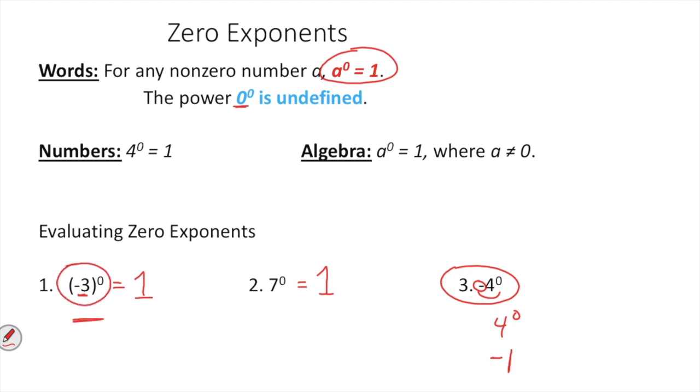Here, the negative was in the parentheses raised to the zero power as one. Here, the negative is not in the parentheses, so my final answer ends up being a negative one.